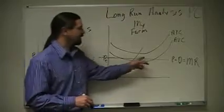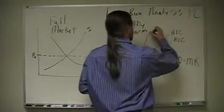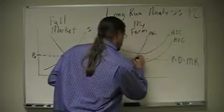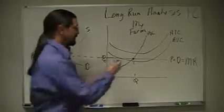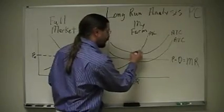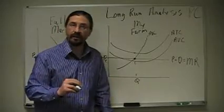And for my particular firm, we look at our analysis and we see, okay, here's where we should produce. And unfortunately, we're losing money because the average total cost per unit of corn that we're producing is less than the price that we're getting for it.